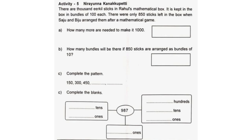Activity 5 - Mathematical Box: There are 1000 matchsticks in Rahul's mathematical box, kept in bundles of 100 each. There were only 850 sticks left in the box when Saju and Biju arranged them after a mathematical activity. A. How many more are needed to make it 1000? Answer: 150.